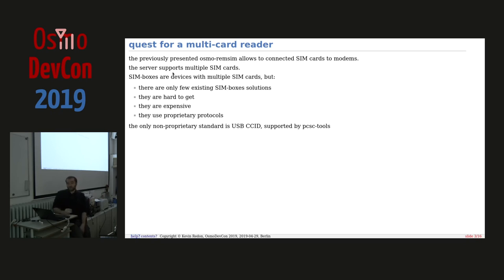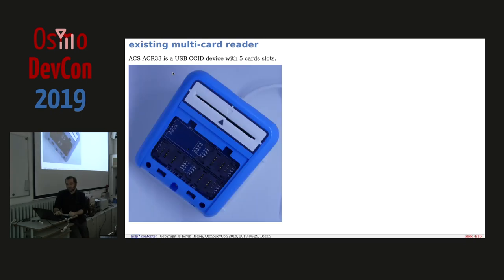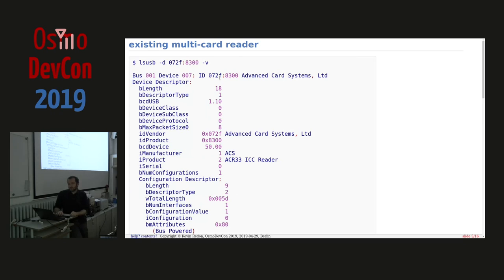There is a USB standard called USB CCID which defines how to talk to smart cards or SIM cards, and using just one USB device you can have up to 128 smart cards. So we looked around to find devices with 128 SIM cards using the USB CCID profile, and there are none. The most we could find is a device with five card slots — three behind a cover, one here, and one on the side.